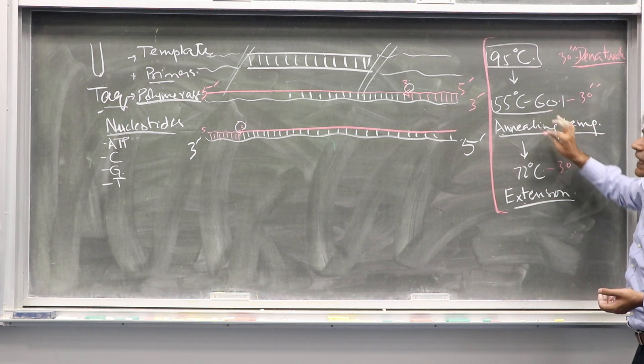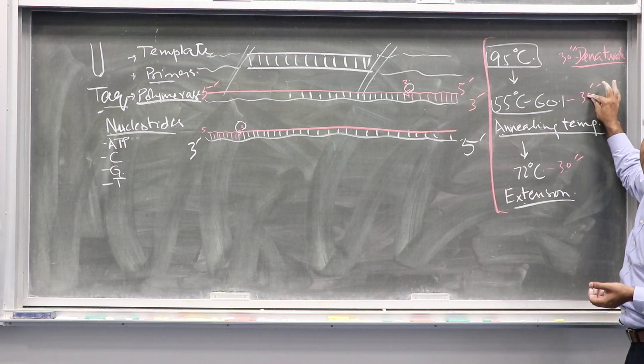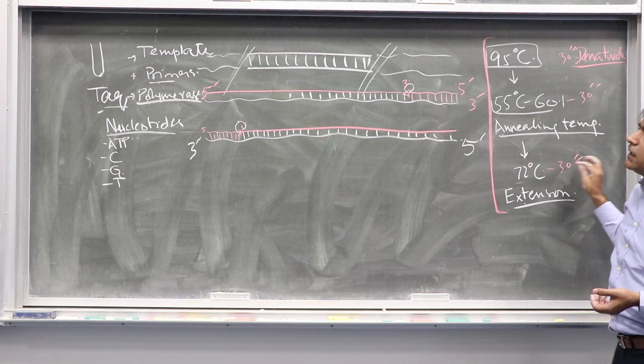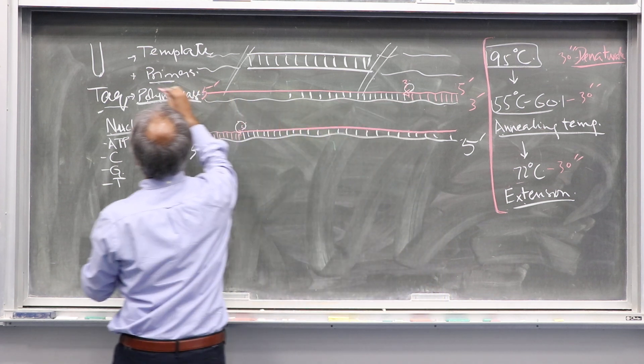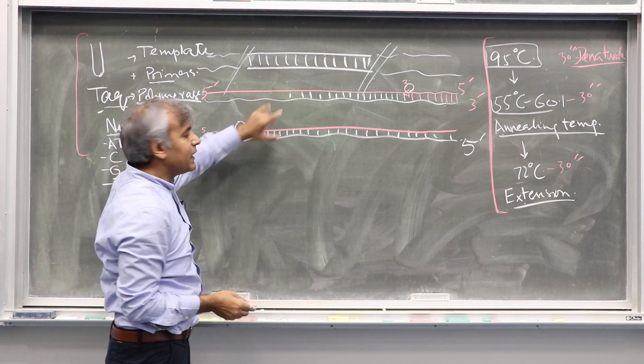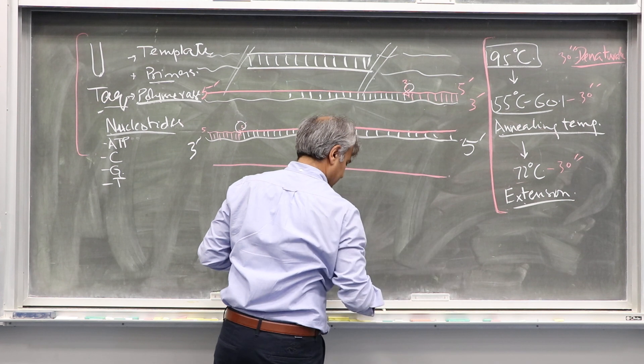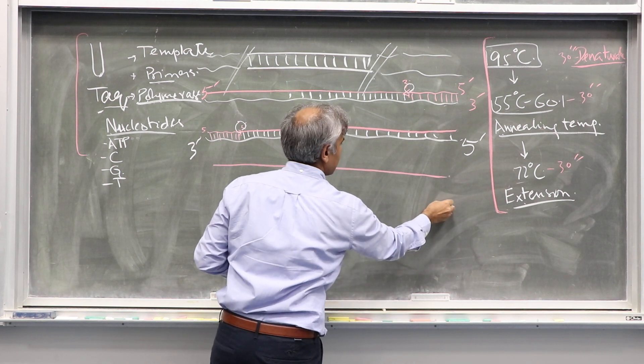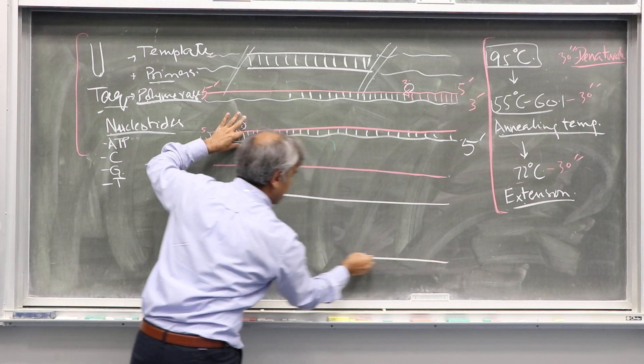Denaturation, annealing, extension: 95 for 30 seconds, 55 or 60 for 30 seconds, 72 for 30 seconds. In the first round, you have two strands of DNA. Now these two will undergo denaturation.